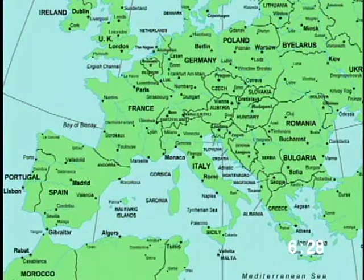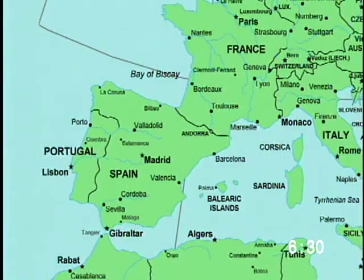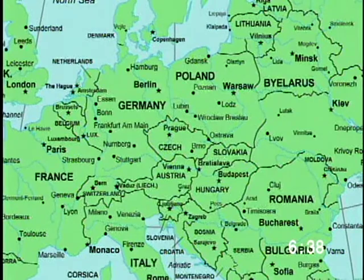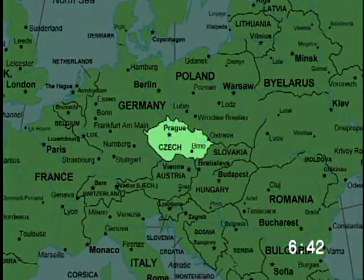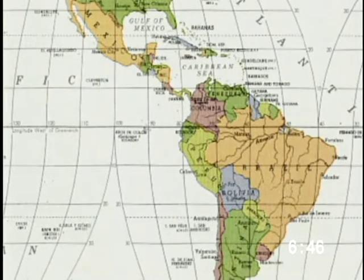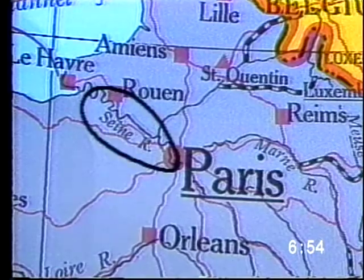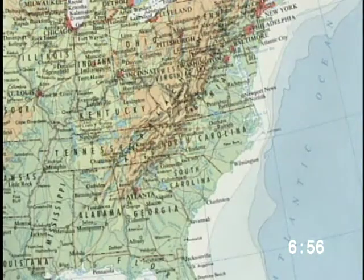Now look at this map of Europe. What country is east of Portugal? If you said Spain, you are correct. What nation is between Austria and Poland? Yes, it is the Czech Republic. It is easy to see the different nations because of the use of colors. Can you find the river that flows through Paris, France? That's right, it's the Seine River. On political maps, rivers are shown in blue.